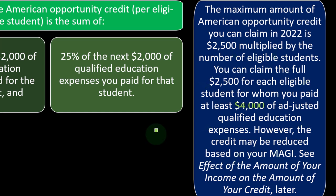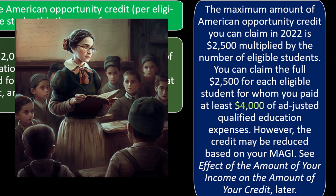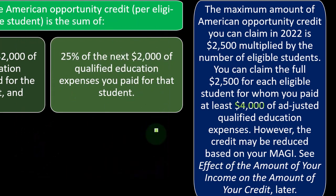However, the credit may be reduced based on your MAGI — your Modified Adjusted Gross Income. We have that income phase-out: as your income goes above the threshold, the cap of $2,500 you could get from the credit could be reduced.